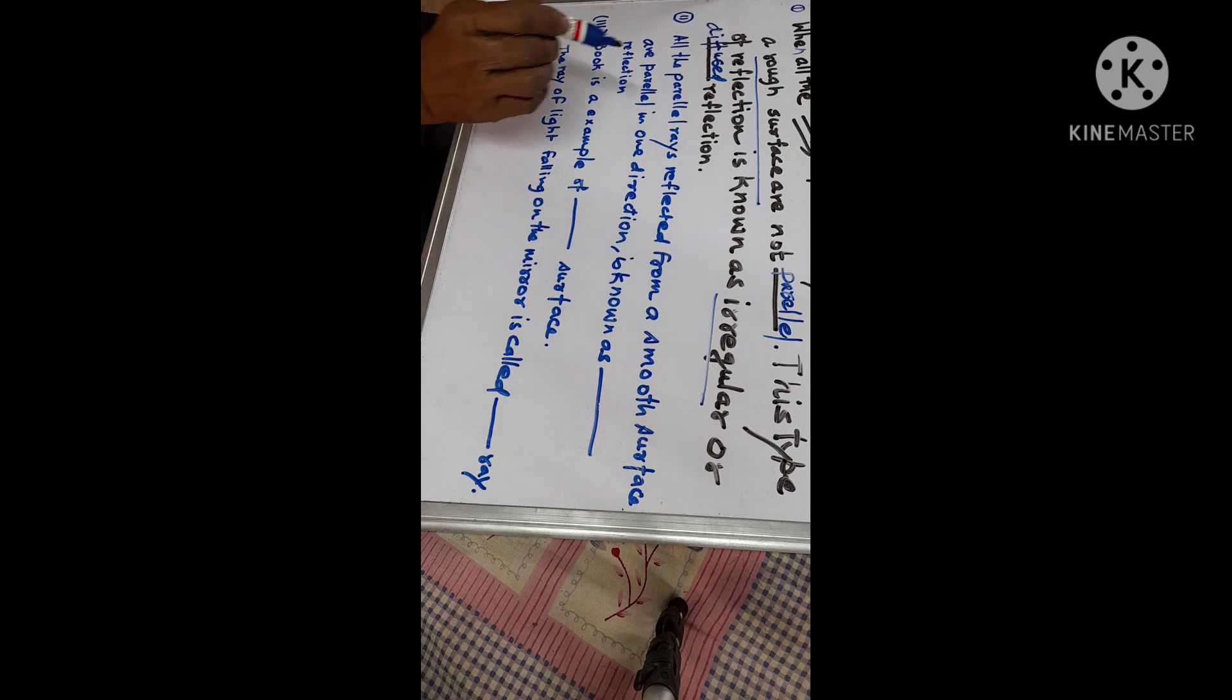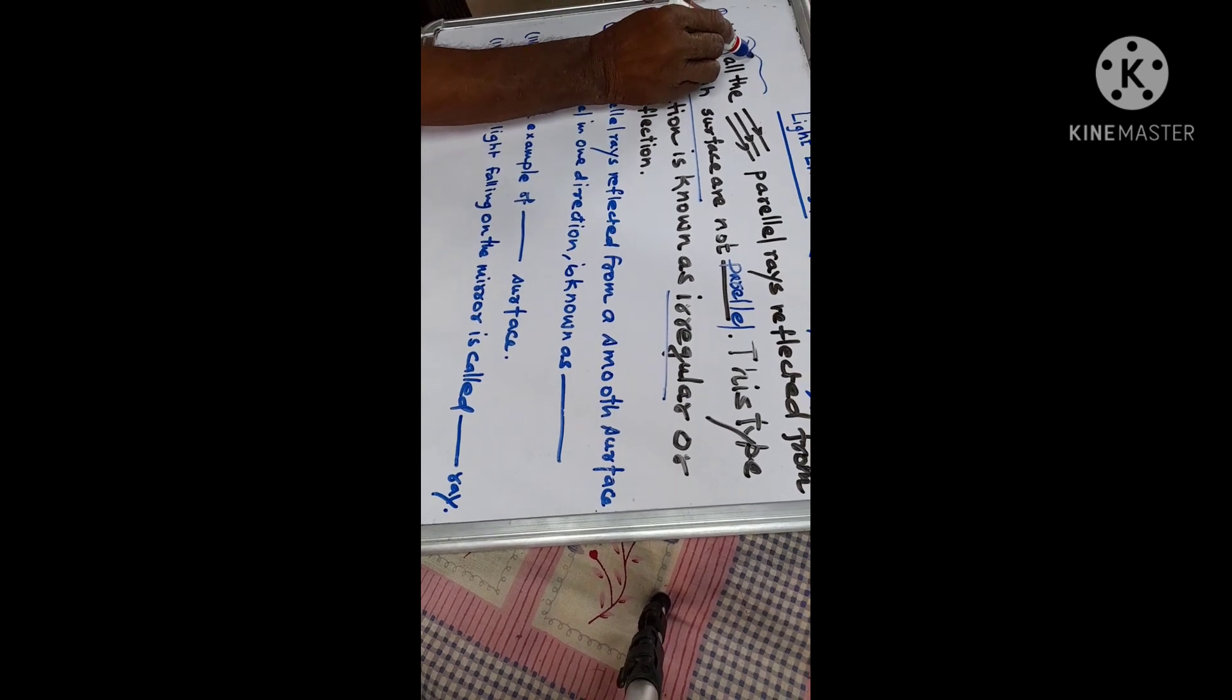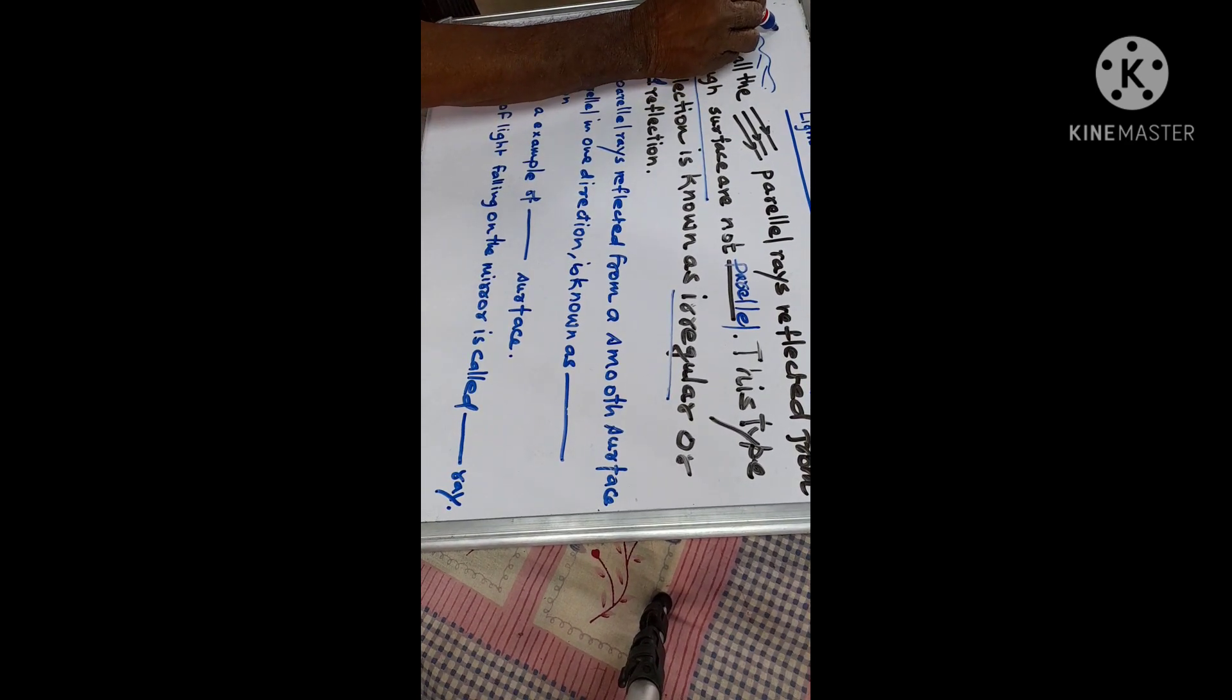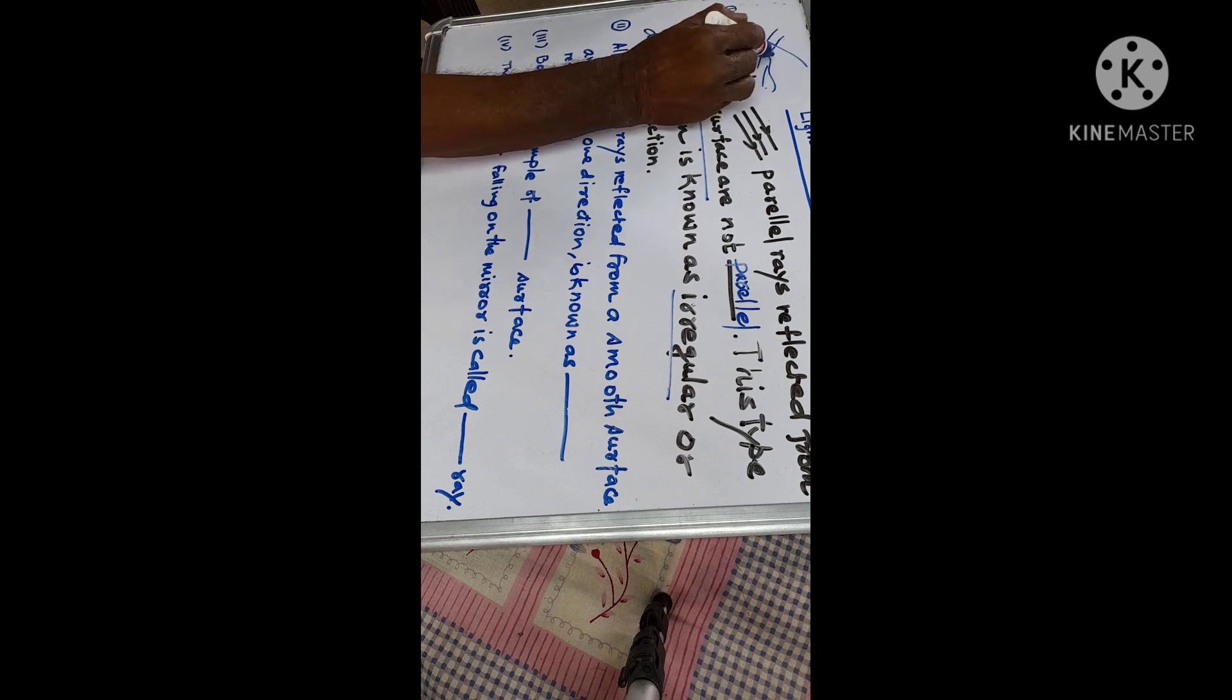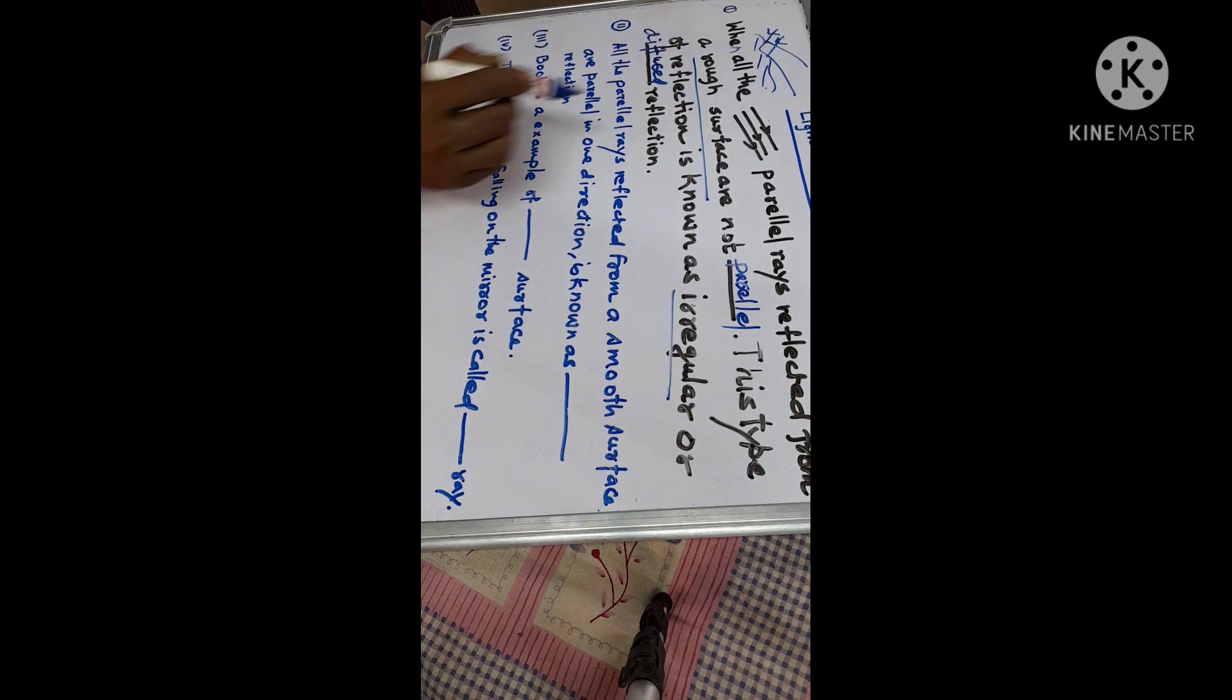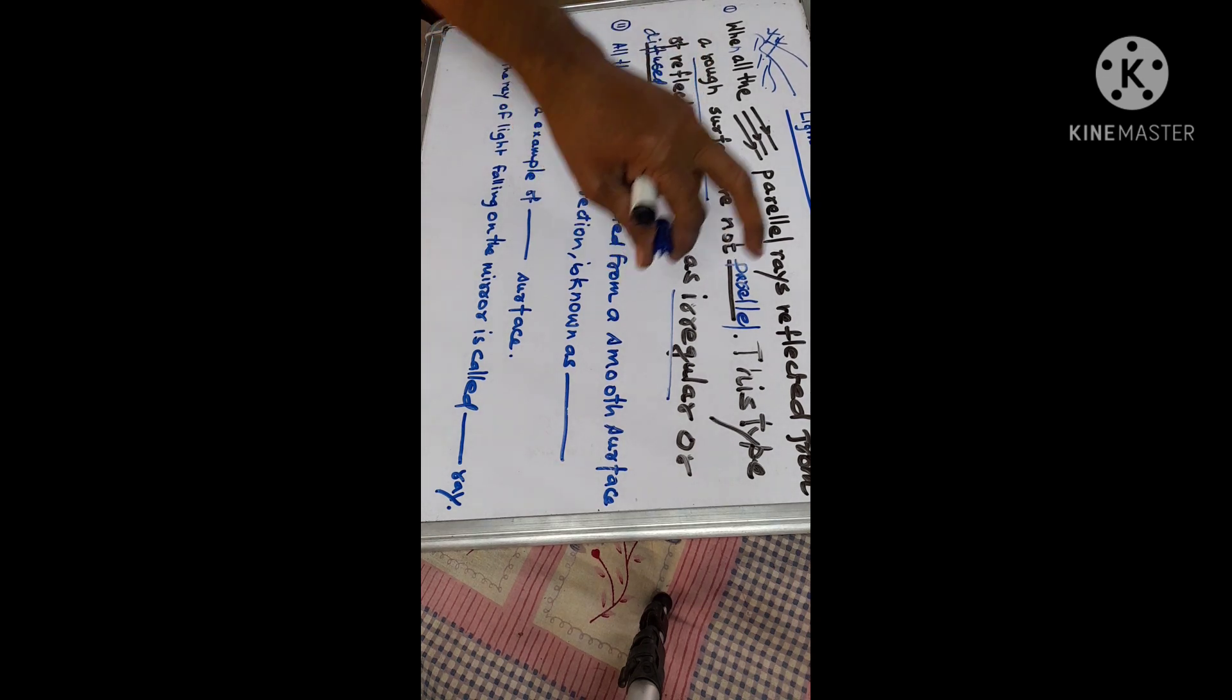And when a parallel line falls on a rough surface, parallel rays falls on a rough surface, it never, after reflection it never is parallel. Because of the rough surface. Is it clear?